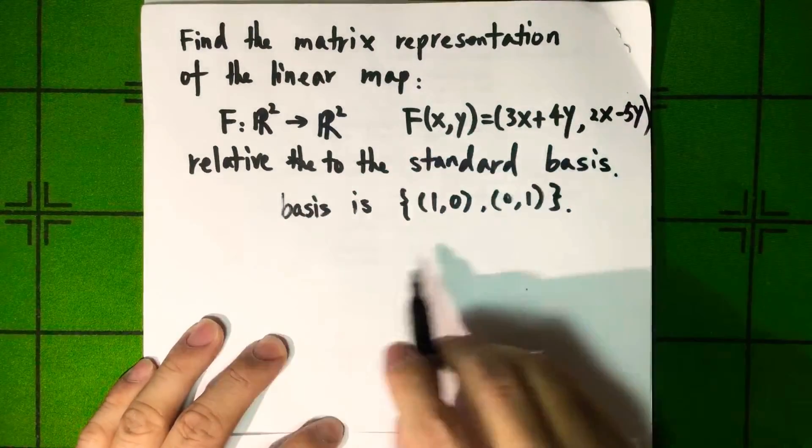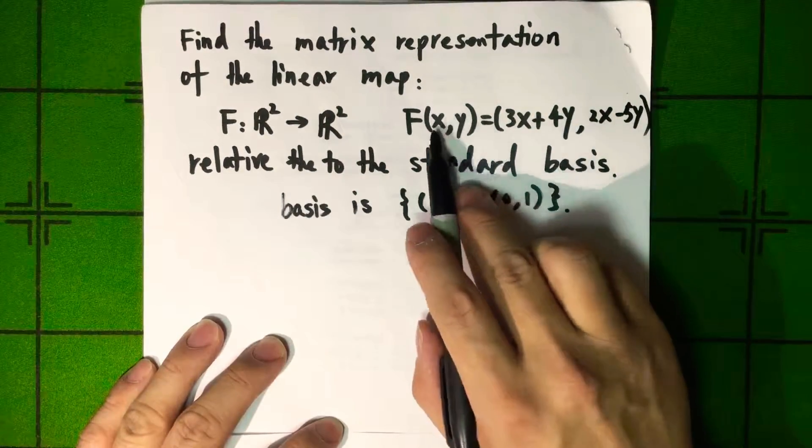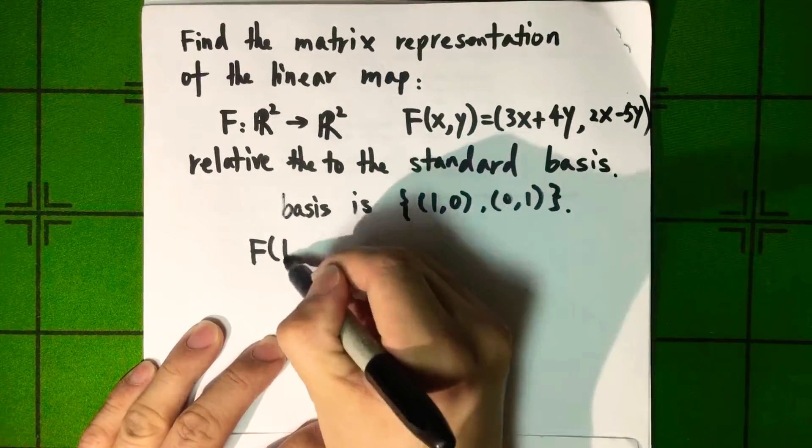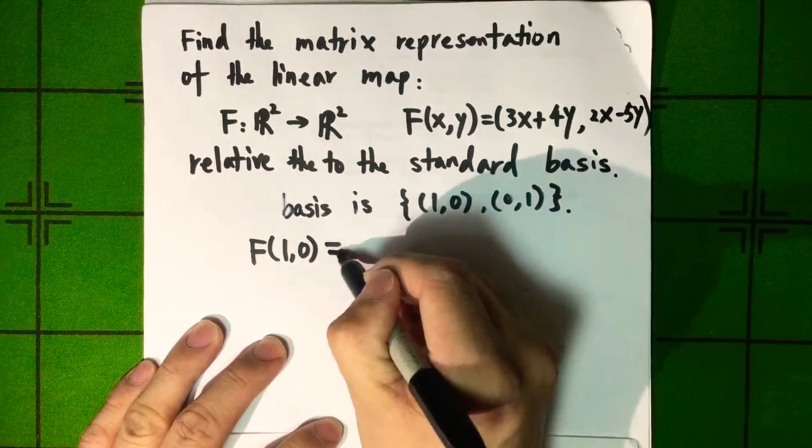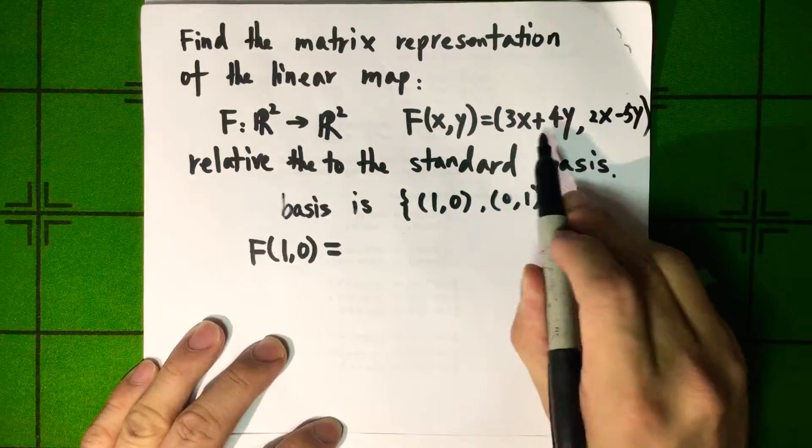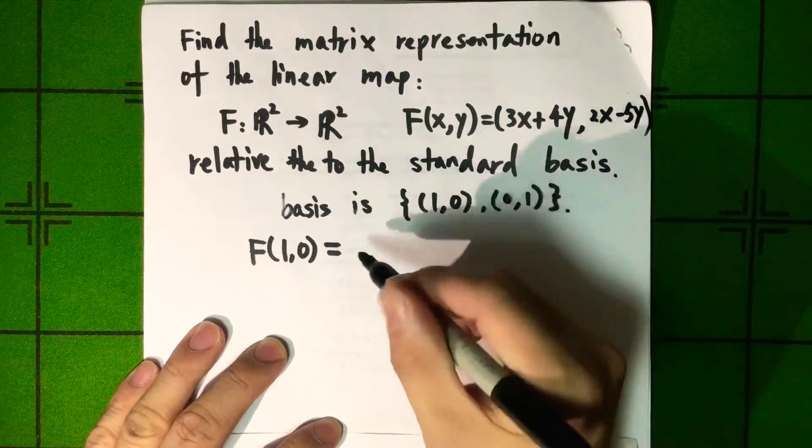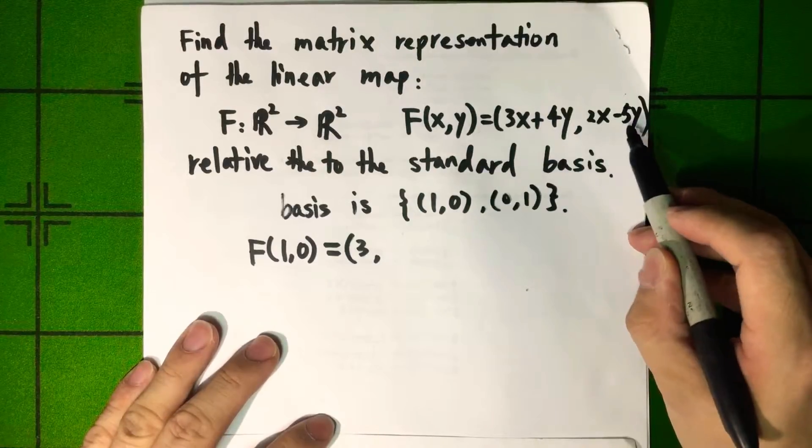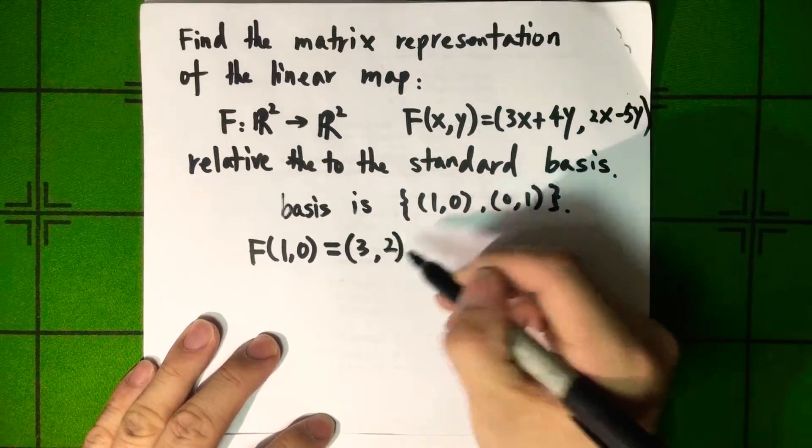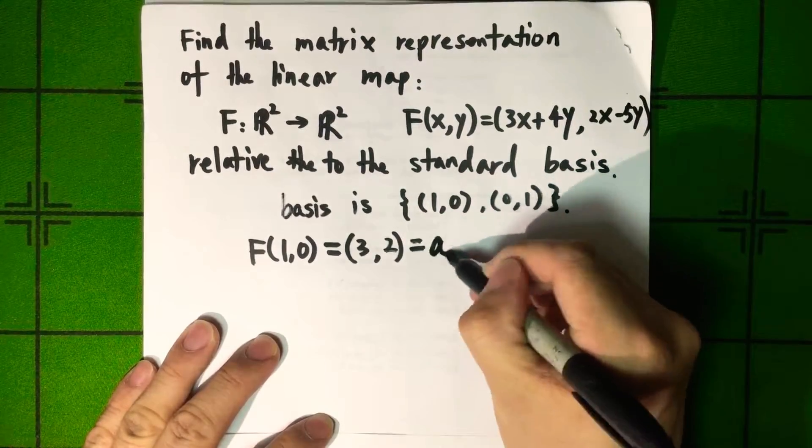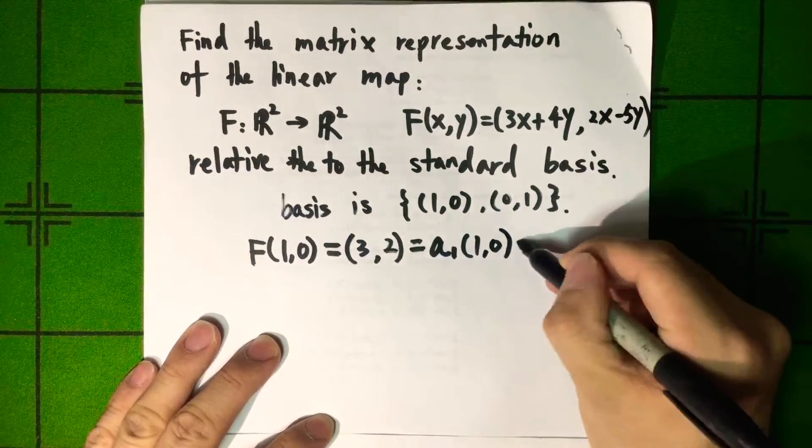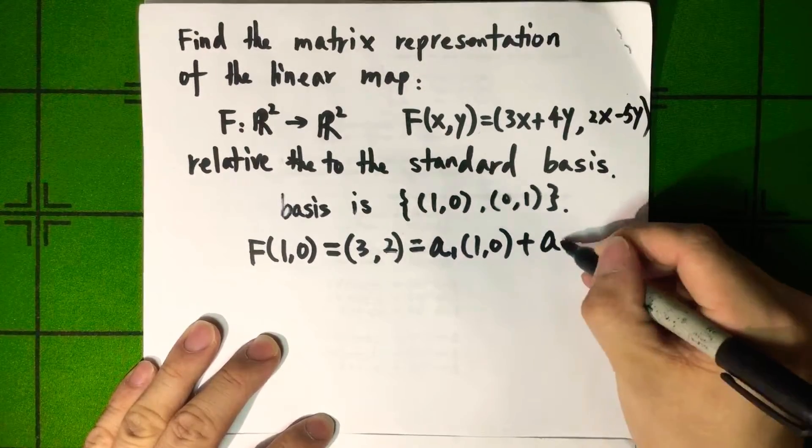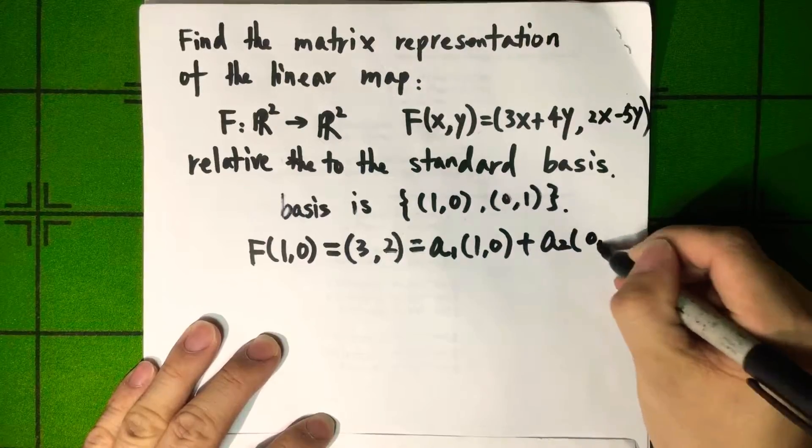Now we plug in (1, 0) into the function. 1 for x, 0 for y, we have 3. And 1 for x, 0 for y, we have 2. This is going to be equal to A1 times (1, 0) plus A2 times (0, 1).